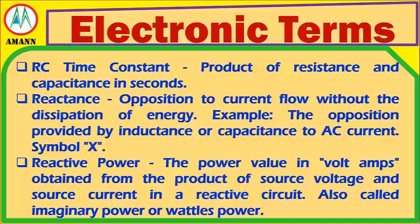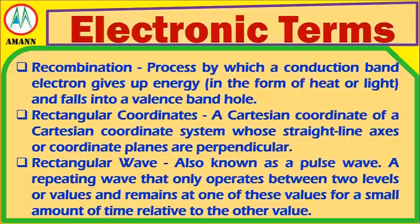Reactive Power: the power value in volt-amps obtained from the product of source voltage and source current in a reactive circuit, also called imaginary power or wattless power. Recombination: a process by which a conduction electron gives up energy and falls into a valence band. Rectangular Coordinates: a Cartesian coordinate system whose straight-line axes or coordinate planes are perpendicular.